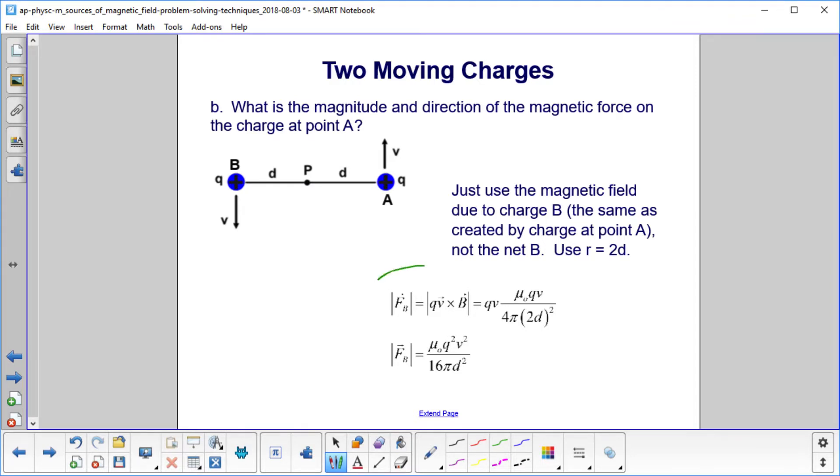To find the magnitude of the force, well, that's just QV cross B, and you can see we're taking the magnitude. But what magnetic field do we use? Not the magnetic field at point P, but the magnetic field due to just this guy moving.